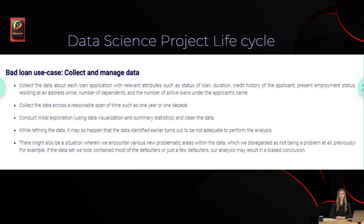Bad loan use case — Collect and manage data. Collect the data about each loan application with relevant attributes such as status of loan, duration, credit history of the applicant, present employment status, residing at an address since, number of dependents, and the number of active loans under the applicant's name. Collect the data across a reasonable span of time such as one year or one decade. Perform initial exploration using data visualization and summary statistics, and clean the data. While refining the data, it may happen that the data identified earlier turns out to be not adequate. There might also be new problematic areas within the data we previously disregarded. For example, if the dataset contained mostly defaulters or just a few defaulters, our analysis may result in a biased conclusion.